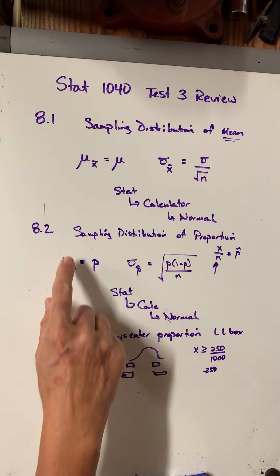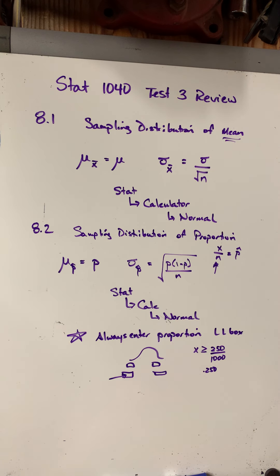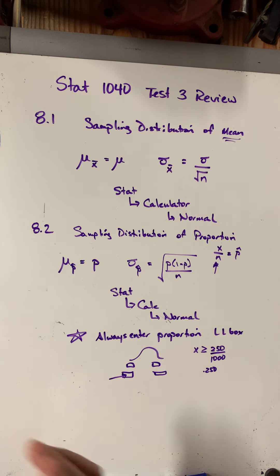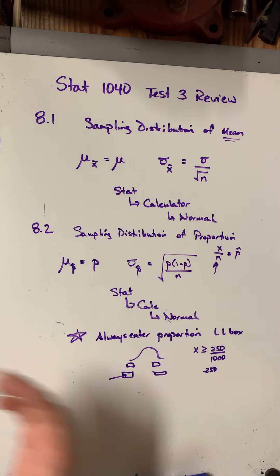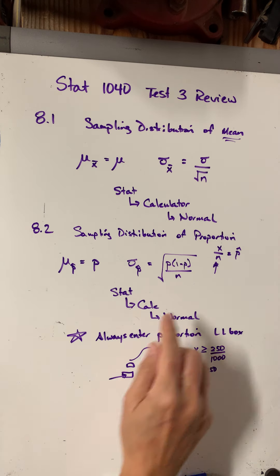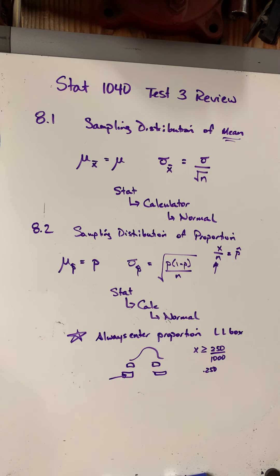What does it mean to do a sampling distribution of proportions? Instead of taking one sample and finding, say, 4 out of 10 Skittles were purple, you'd take lots and lots of samples and find the average of those proportions. That's a little weird, but for both 8.1 and 8.2, the process was generally the same: find the mean, find the standard deviation, put them into your calculator, and answer a question about probability.